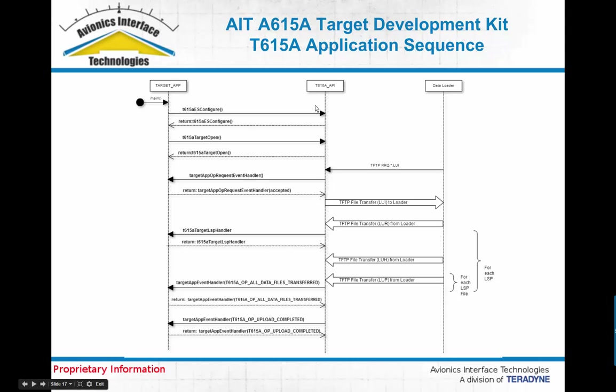The first thing that has to happen is you have to configure the API — things like the status period, so how often the status files are sent, what some of the timeouts are, and what version of the 615A protocol the target API should use. There's a simple function call that passes in this configuration information, which comes in the form of a file created using our data loader GUI application. You define all these timeouts, save them to a file, and the target application loads that file into the API to configure all the protocol's configurable items.